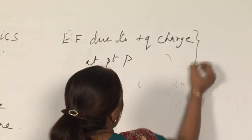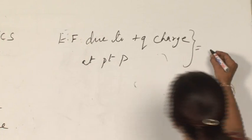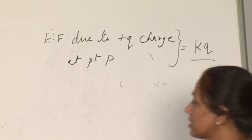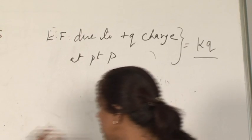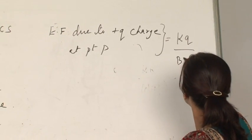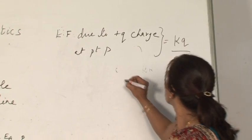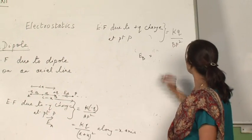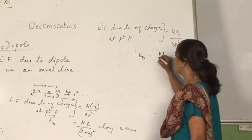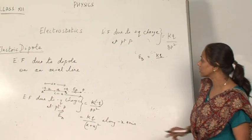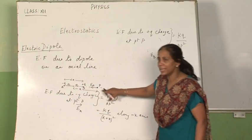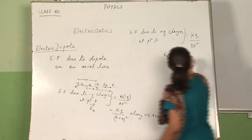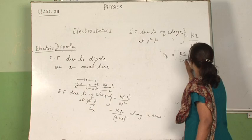E_B will be equal to kq upon BP square. So this can be represented as E_B is equal to kq upon BP square. Students, just check it — this is my x and this is my a, so BP will be x minus a, so it is x minus a the whole square.